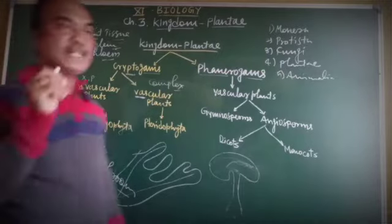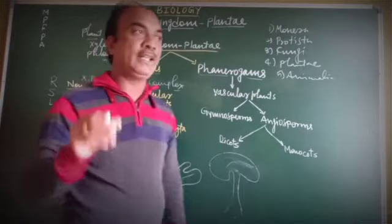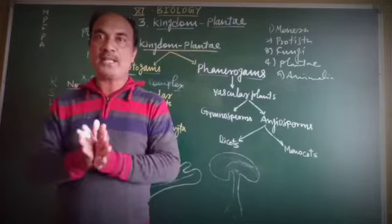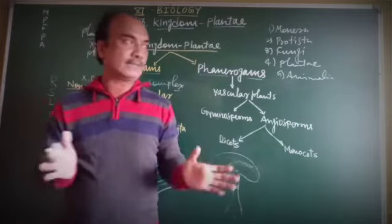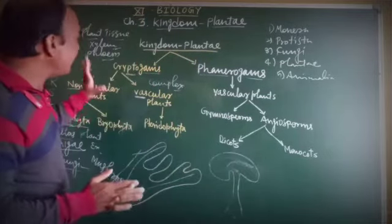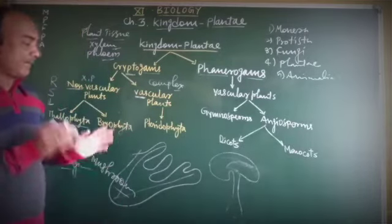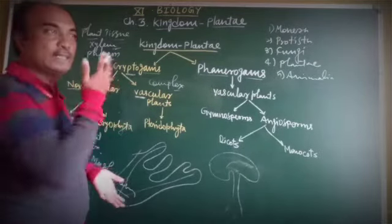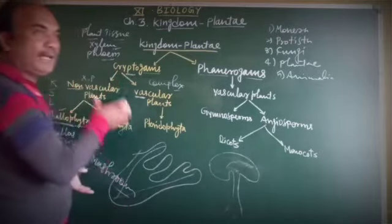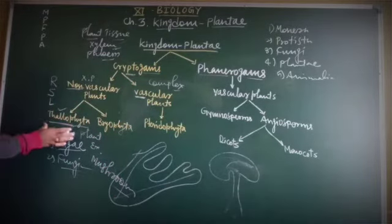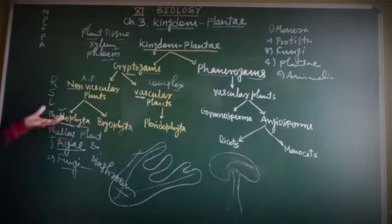Fungi have a thallophytic nature — meaning the plant body is thalloid or thallus-like, with undifferentiation of root, stem, and leaves. Such plant groups are called Thallophyta.